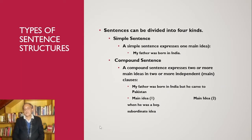A sentence can be divided into four types. Number one is the simple sentence. A simple sentence expresses one main idea, and that is the best way to write a sentence — it should accommodate not more than one main idea. For example: 'My father was born in India.' This is a complete statement, a complete idea.